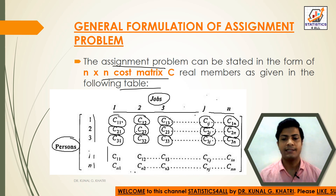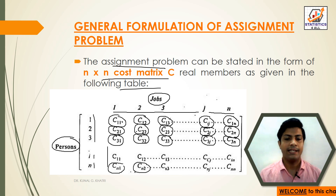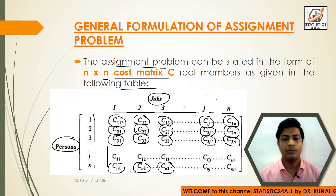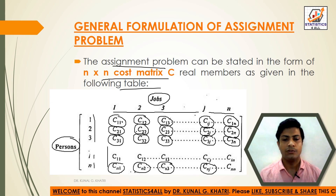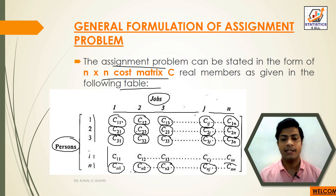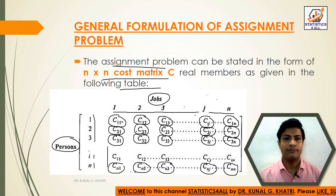And so on — Cn1 nth row first column, Cn2 nth row second column, Cn3 nth row third column, Cnj nth row jth column, and Cnn nth row nth column. So this is the n×n matrix — the general formulation of the assignment problem.